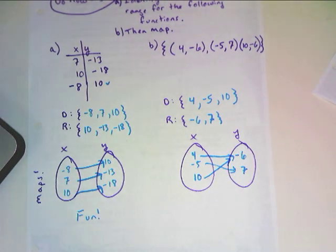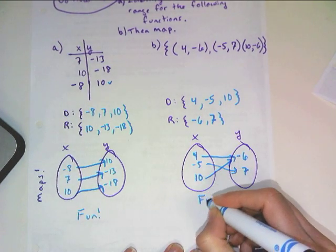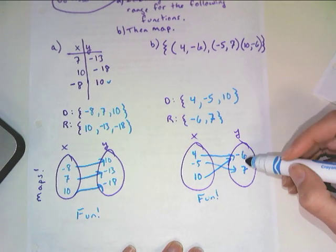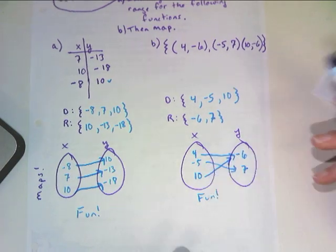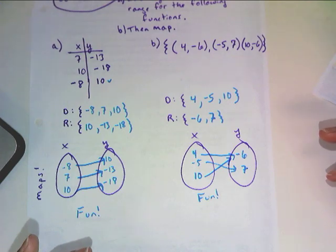So it looks like, again, we have a function. So in this case, y the negative six is popular, but each x goes to one and only one output.